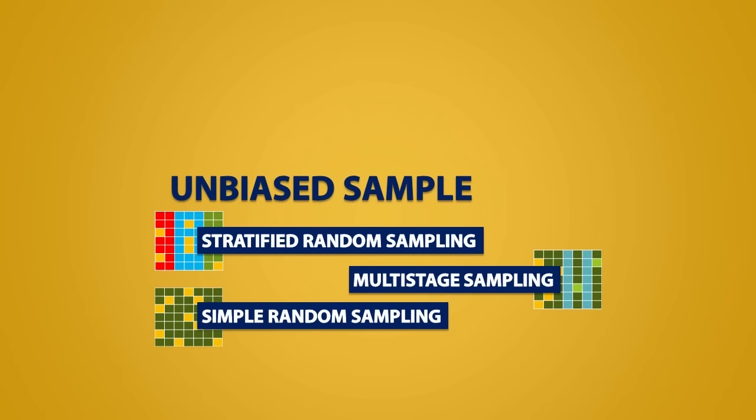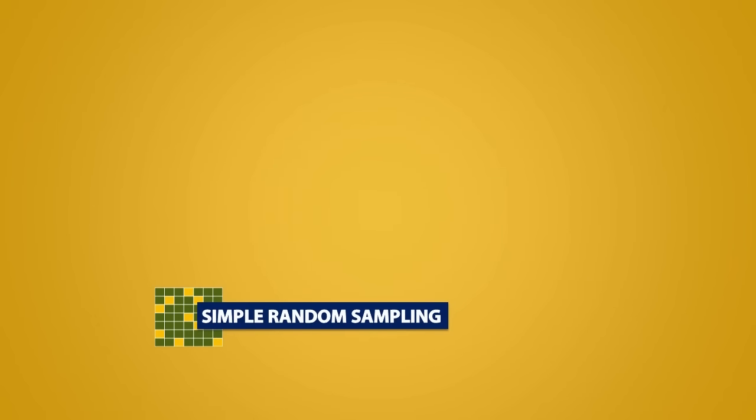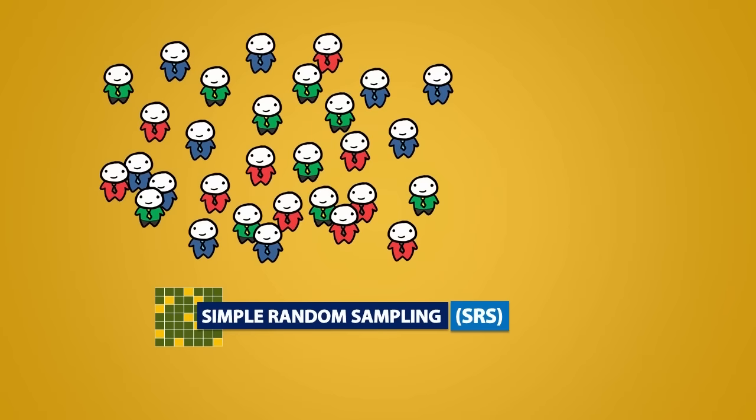The most basic type of sampling is the simple random sample, also known as an SRS. Since an SRS is unbiased, each individual has an equal chance of being chosen to be surveyed, in other words, to be part of the sample.